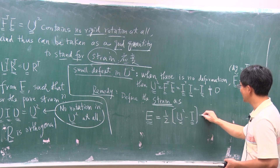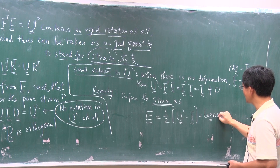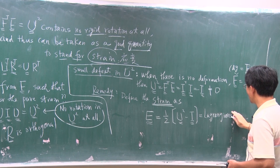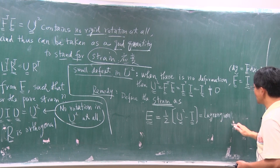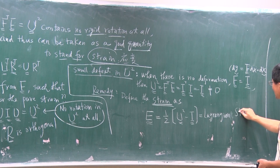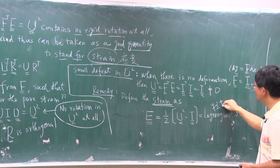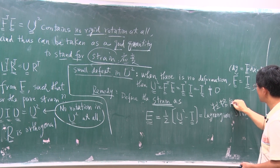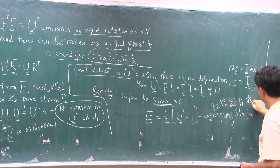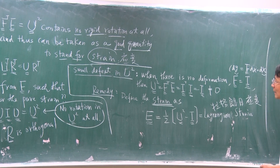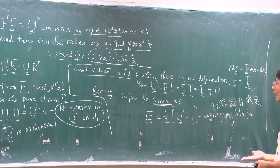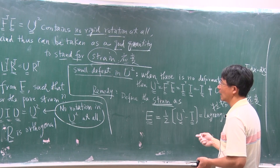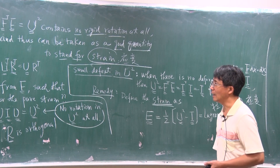This is the Lagrangian strain — remember this name, Lagrangian strain. This is the strain we finally have. This strain has a lot of merit; we will explain it later.